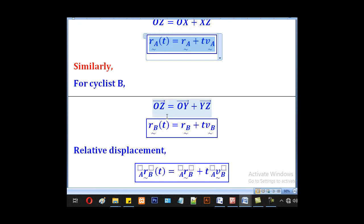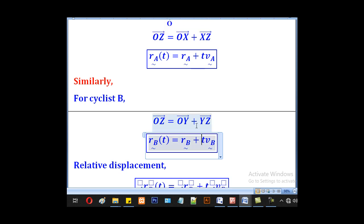For cyclist B, we shall use the same knowledge. OZ equals OY plus YZ. OZ is the position vector after time T, and OY is the initial position vector of cyclist B. And YZ, which is VB times T, will be the displacement moved by cyclist B.